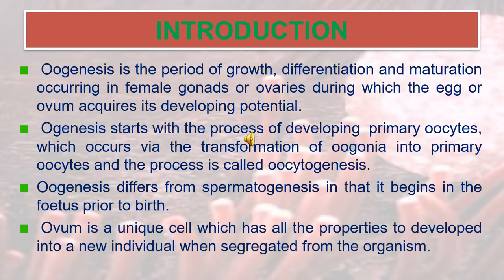Oogenesis is the period of growth, differentiation and maturation occurring in female gonads or ovaries, during which the egg or ovum acquires its developing potential. Starting with the process of developing primary oocyte, which occurs via the transformation of oogonia into primary oocyte, the process is called oocytogenesis. Oogenesis differs from spermatogenesis in that it begins in the fetus prior to birth. The ovum is a unique cell which has all the properties to develop into a new individual when segregated from the organism.